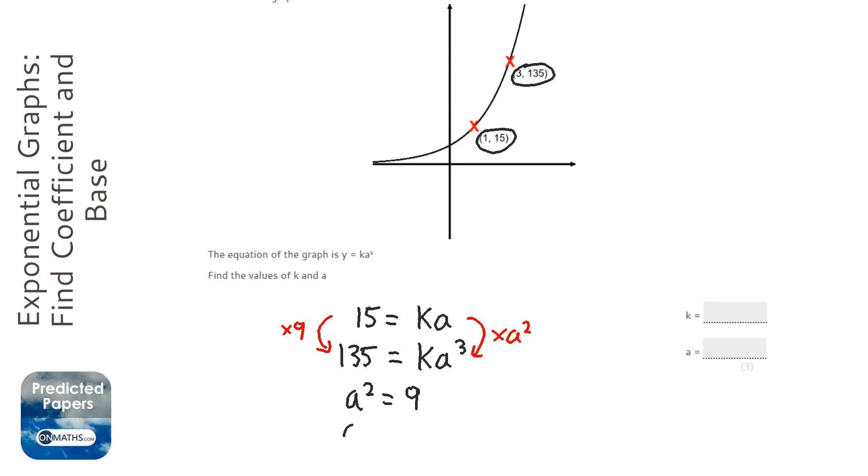So we then square root that. Now, this is where it gets interesting. You actually get a positive and a negative 3, but the reason I know it's positive 3 is because if it was a negative, the actual graph would look like this. So if it's a normal exponential graph, which this is, because this passes through 1 here, then it's going to be a positive power.